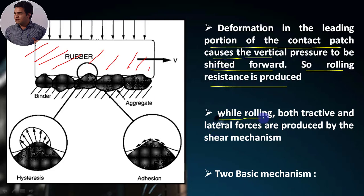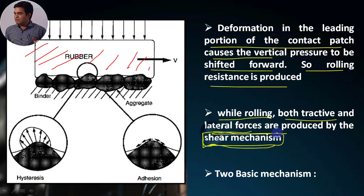While considering the rolling movement of the vehicle, both tractive and lateral forces are produced by the shear mechanism. While rolling, due to the lateral forces acting on the tread pattern of the tyre, the shear mechanism produces the lateral force and the tractive force. Basically, the wall mechanism is divided into two phenomena: one we call hysteresis and the second we call adhesion. Due to these two mechanisms, wall forces are generated and considered for the analysis of the tyre.